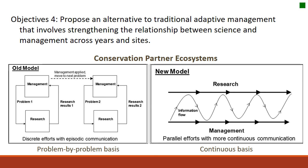This broken communication doesn't foster a lot of trust — the manager speaking to the researcher the first time may not even be the same manager the second time around. Without the manager being able to trust the research the researcher is providing, how is the manager supposed to make informed decisions? How is the researcher really supposed to understand what the problem is if communication is limited? It's hard for both sides to get a handle on an issue when there's this broken communication dividing them.